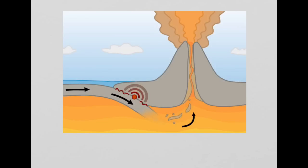You can see that this plate here is denser than this plate here. As a result of that, this plate gets forced under the lighter plate. The denser plate sinks under into the mantle.